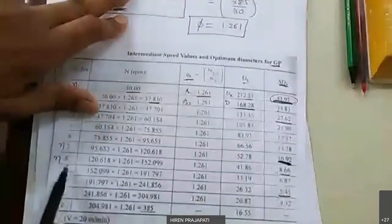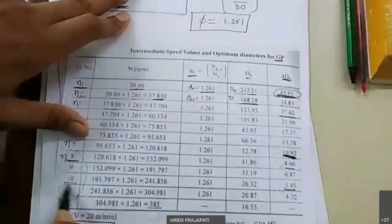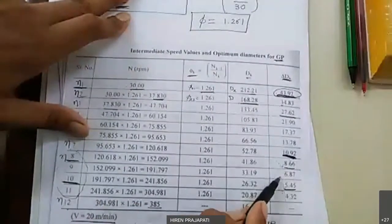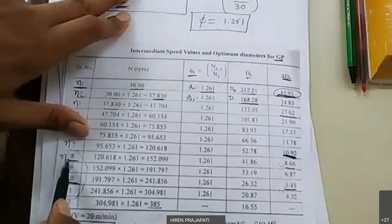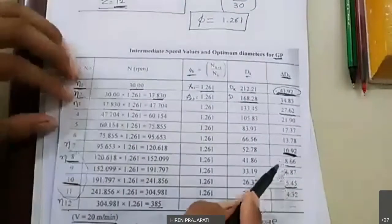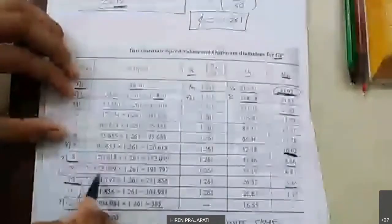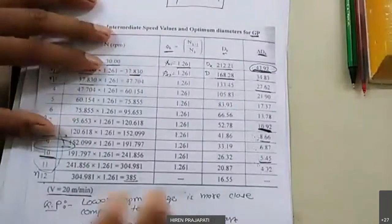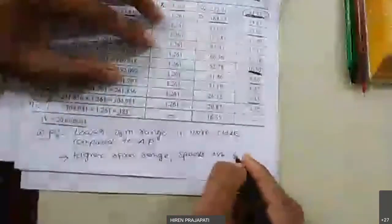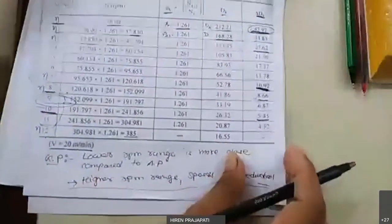So speeds in the higher RPM range are redundant in the case of geometric progression series. Now, the last series to consider is harmonic progression series (HP). A similar table will be prepared for HP. The key difference in harmonic progression series is that the diameter difference (delta d) required to change speed is maintained constant between each successive speed step.